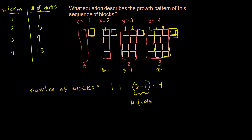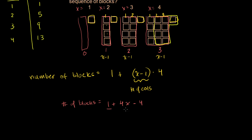Let me simplify this. If I multiply out 4 times (x minus 1), the number of blocks equals 1 plus 4x minus 4. That simplifies to 4x minus 3. So for term 50, it's 4 times 50, which is 200 minus 3, which is 197 blocks.